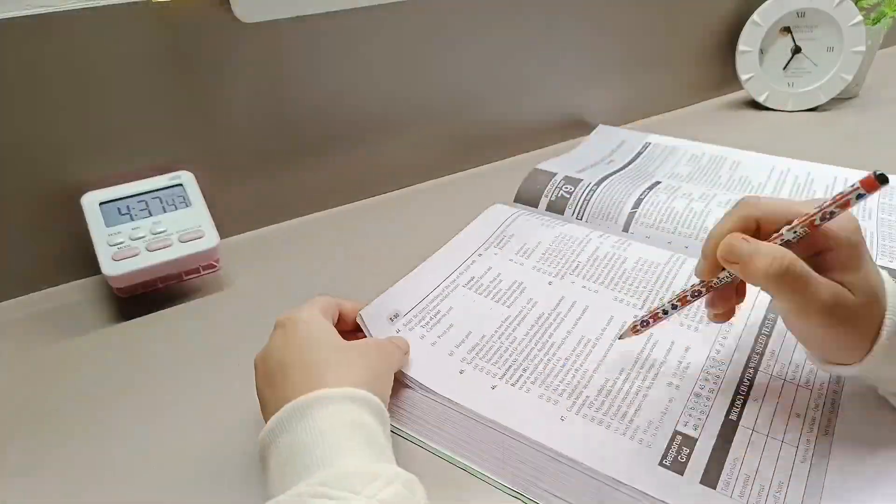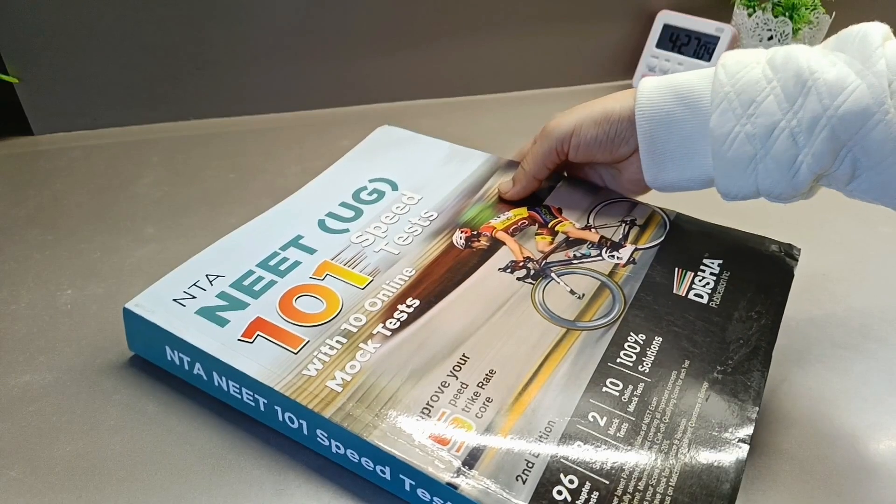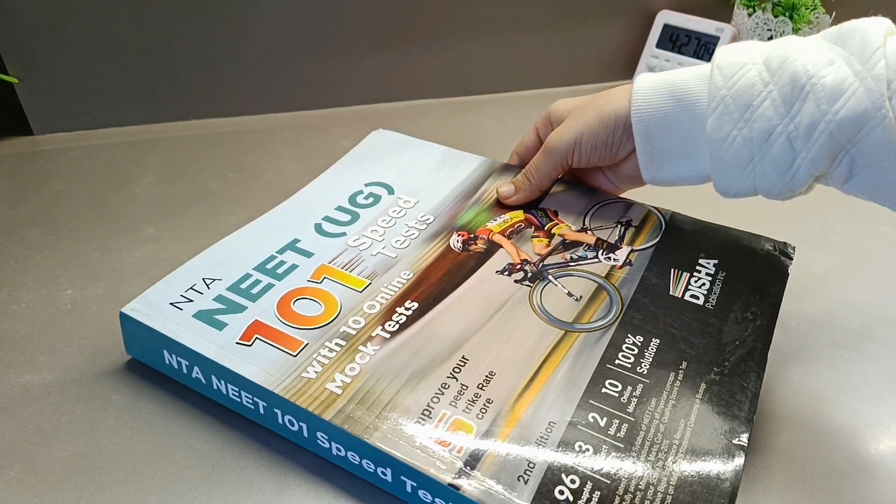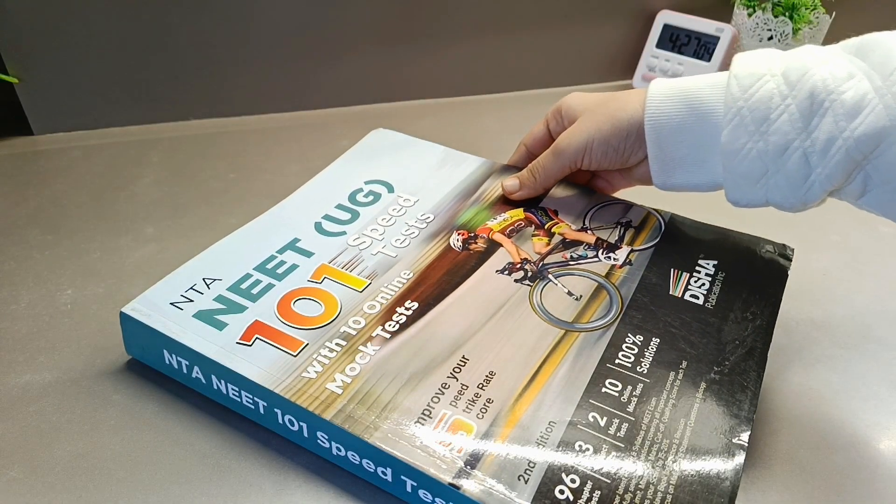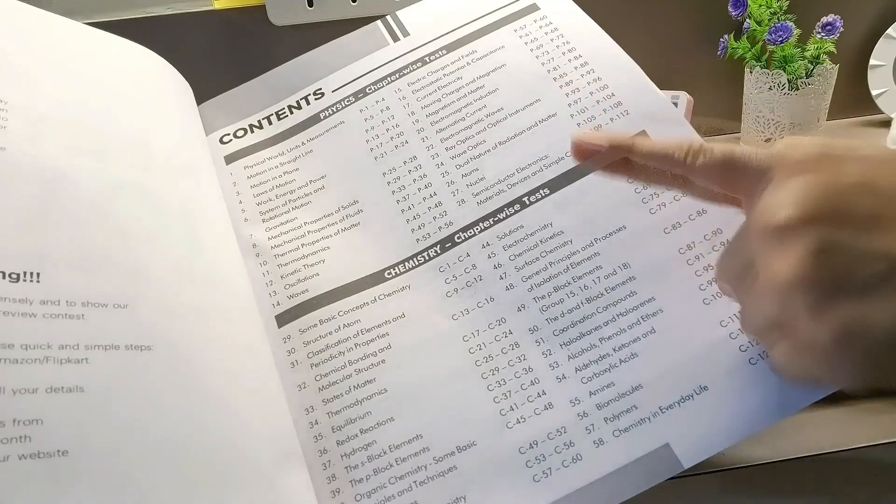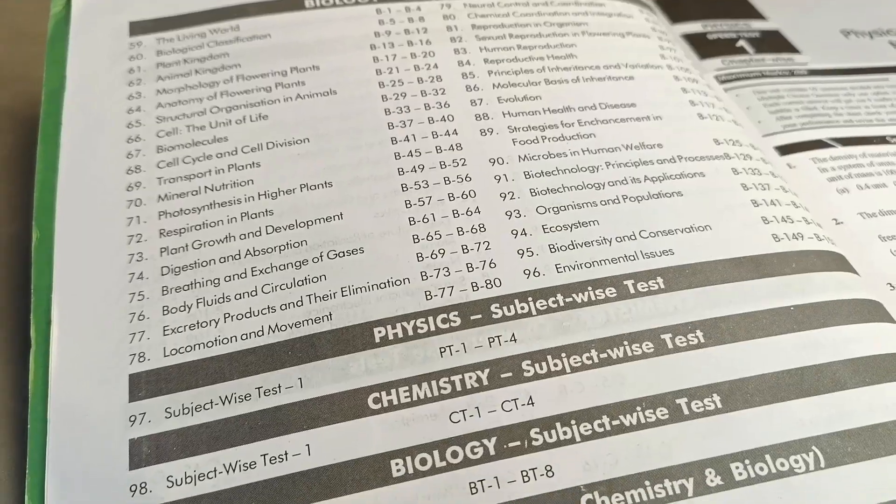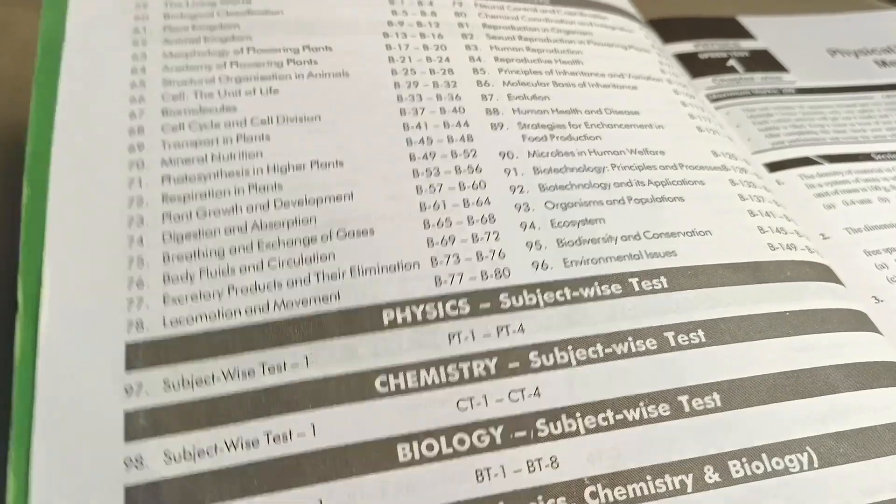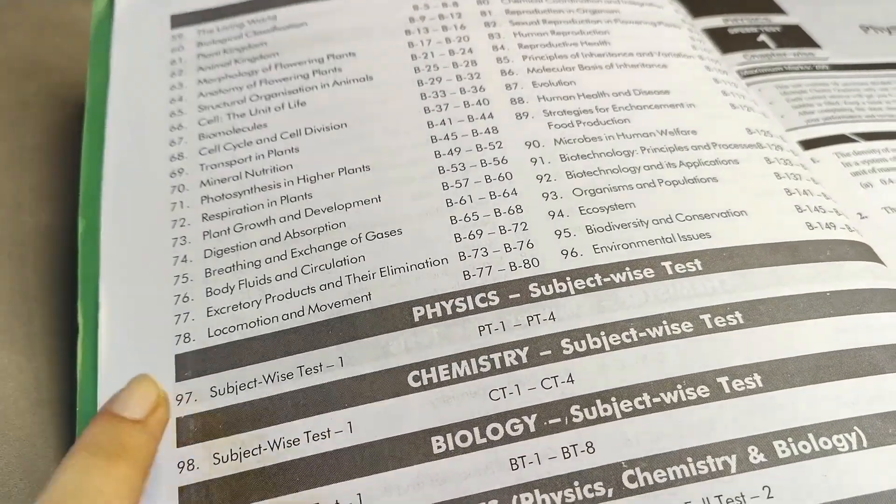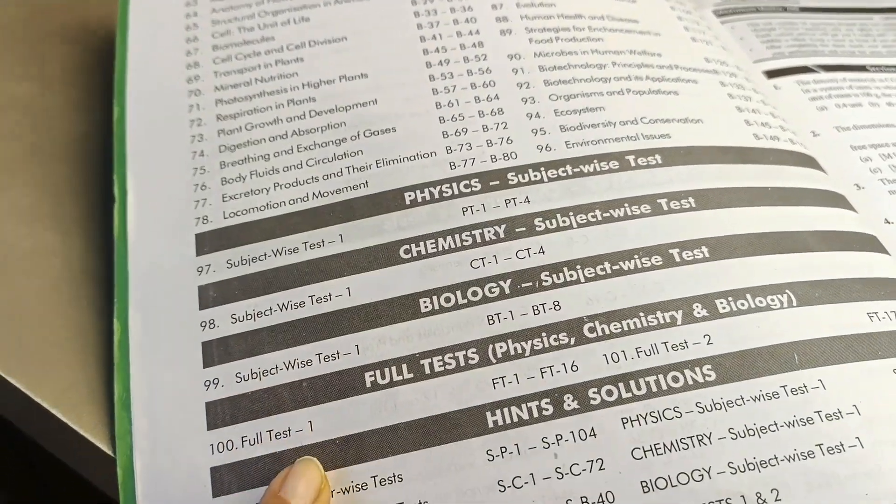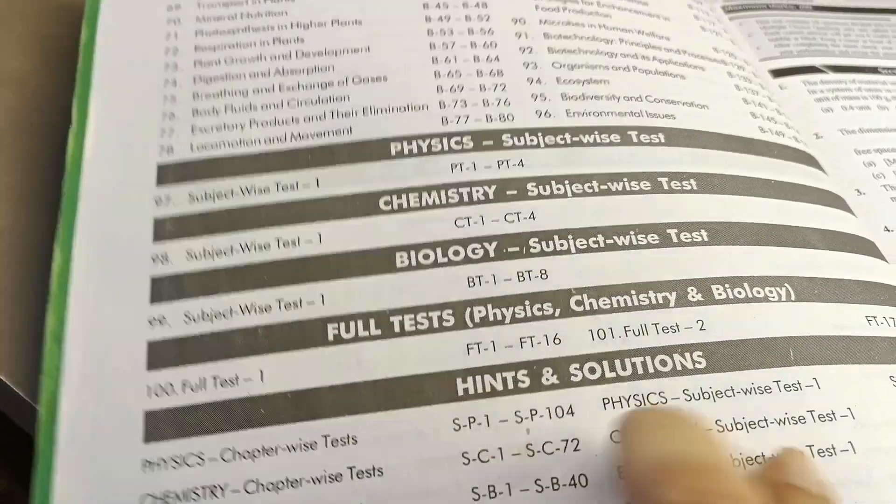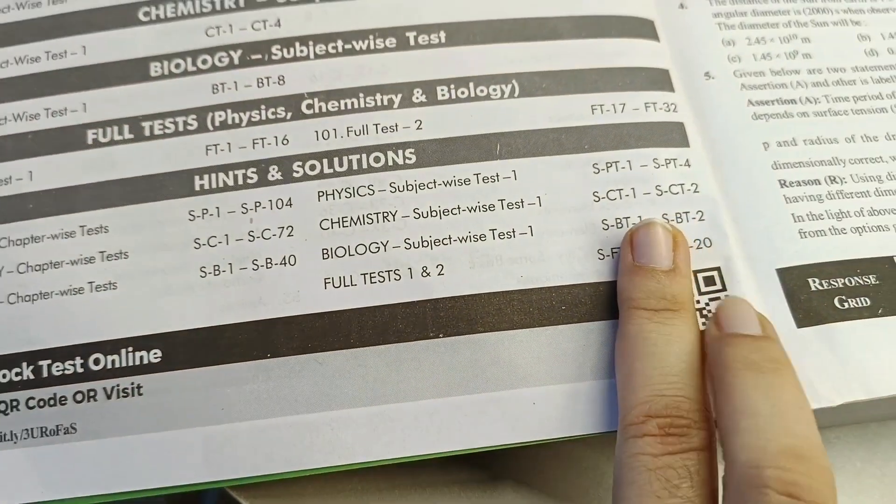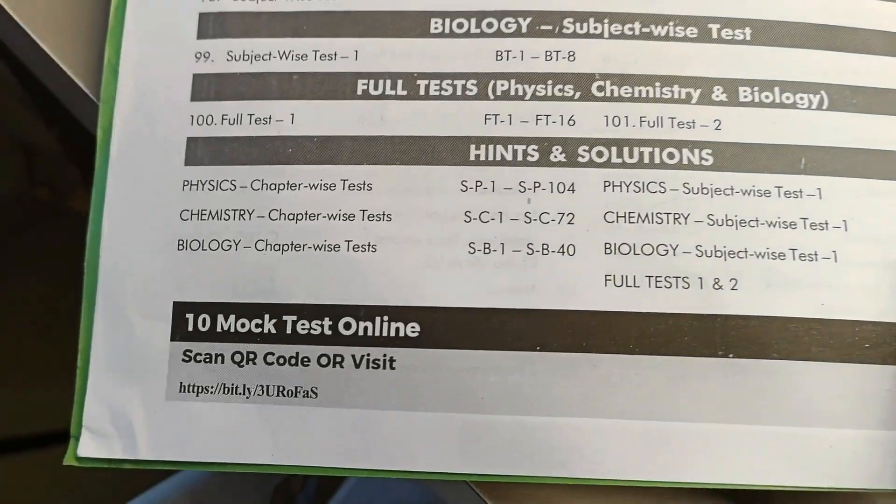So the test is divided into section A and section B, and you don't have to carry any extra OMR sheet because it's already present in the end of every page. It's the NTA NEET 101 Speed Test book by Disha Publications. It has chapter-wise test series for physics, chemistry, and biology, and also three subject-wide tests are present, as well as full syllabus test is also present. Also, 10 online tests are available by scanning the QR code.